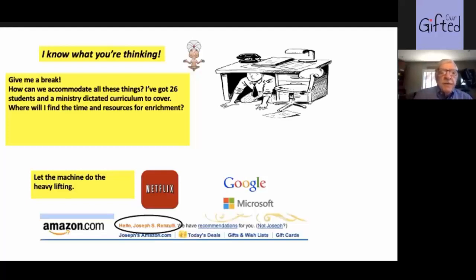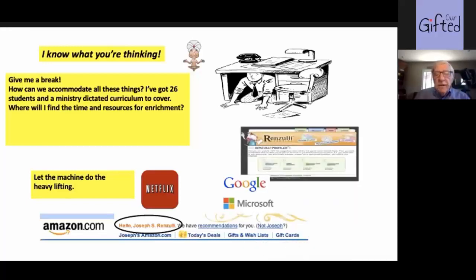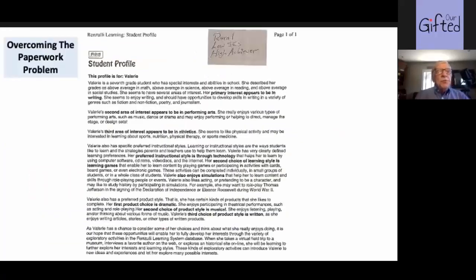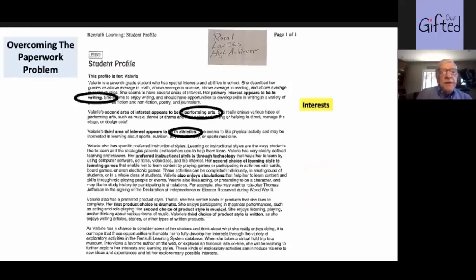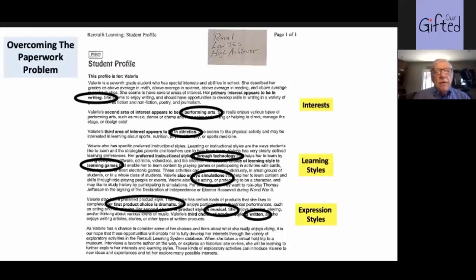Gathering this information in paper-and-pencil format is very time consuming. So we did develop this program called the Renzulli Learning System. What this does is have youngsters answer a series of questions about interest, learning styles, etc., which are analyzed by a computer. The result is a student profile — this is one for Valerie, a sixth-grade girl. This is how we overcome the paperwork problem. The computer analysis points out Valerie's three strongest interest areas, her three best learning styles, and the three ways in which she would like to express herself. But let's let Valerie tell you about this herself — when kids tell the story, it's always better.